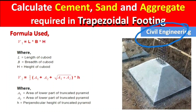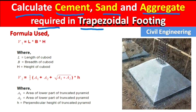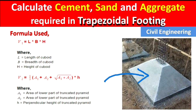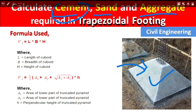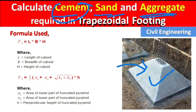Hello guys, welcome to the Civil Engineering YouTube channel. In this video I will talk about how to calculate the cement, sand and aggregate required in a trapezoidal footing. You can see in this picture these types of footing are known as trapezoidal footing. To calculate the cement, sand and aggregate in this footing, we first have to calculate the volume of this footing.